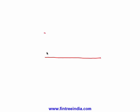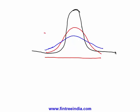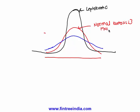Now consider the kurtosis of a distribution. Compared to the normal distribution (shown in red) with kurtosis of 3, a distribution that is more peaked is called leptokurtic, while the normal distribution is called mesokurtic, and a flatter distribution is called platykurtic.